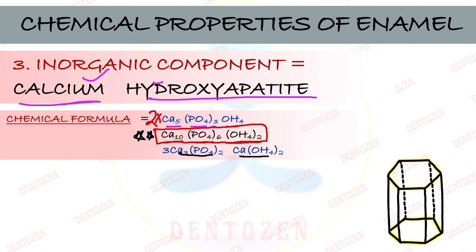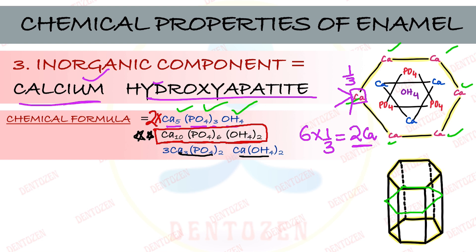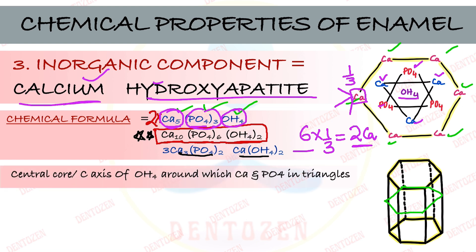If we cut the crystal in cross section, we can see the arrangement of ions: one hydroxyl ion is in the center, three phosphate ions surround it forming one triangle, three calcium ions surround that forming another triangle, and two remaining calcium ions form the periphery. The six peripheral calcium ions are each shared by three crystals, so each is one-third of a calcium ion, giving two full calcium ions at the periphery — total five calcium ions, three phosphate, one hydroxyl.